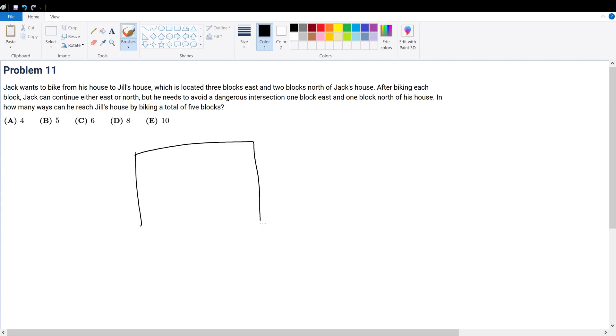So let's draw ourselves a grid. It's going to be 3 blocks east, and then 2 blocks north. So that's Jack's house and that's Jill's house.